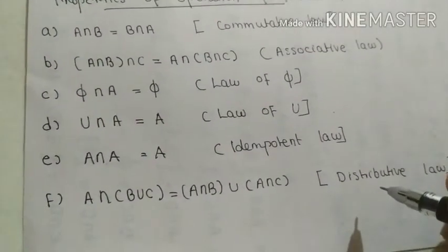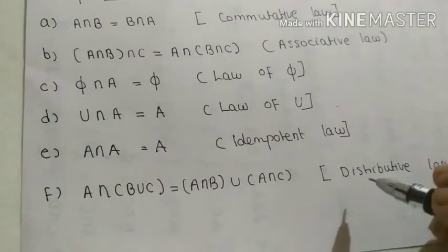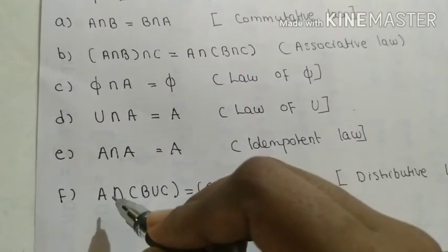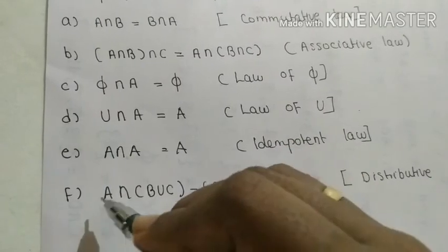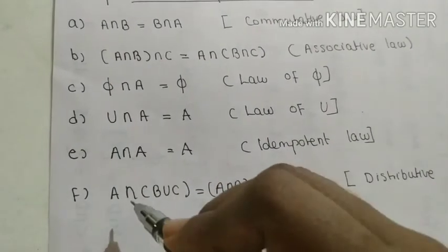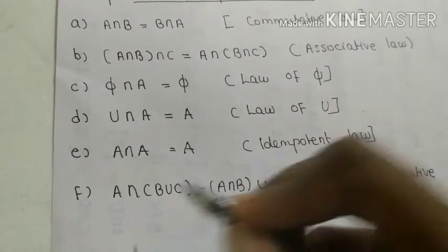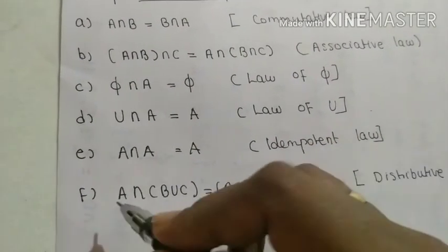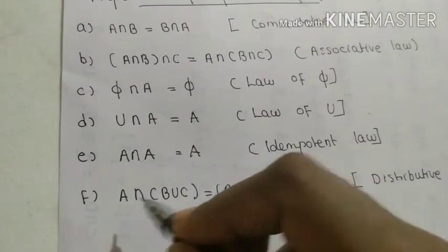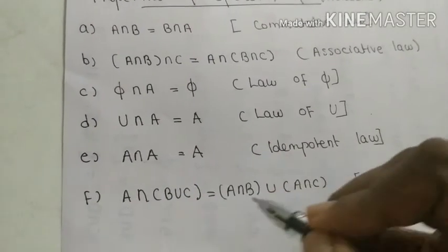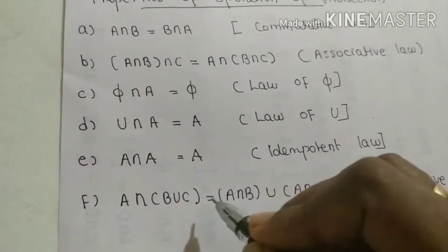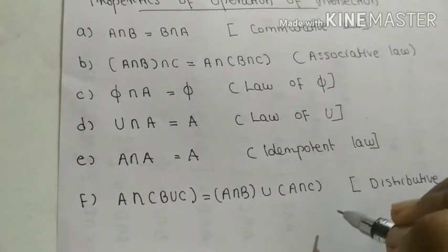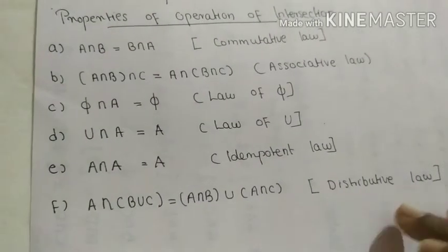The last property is the distributive law, which states that A intersection (B union C) is equal to (A intersection B) union (A intersection C). We distribute the intersection over both elements of the union, giving A intersection B first, then A intersection C. This is known as the distributive law.